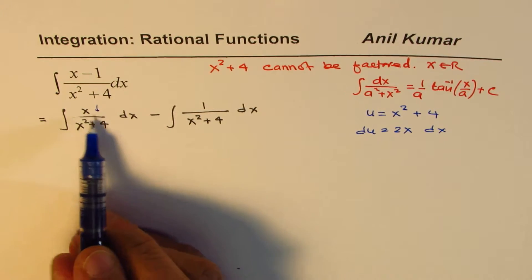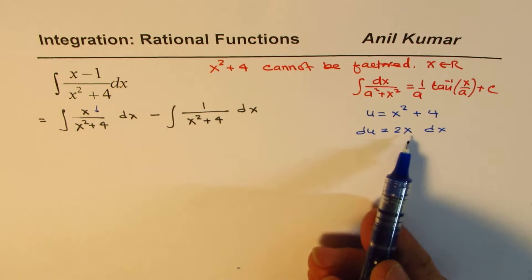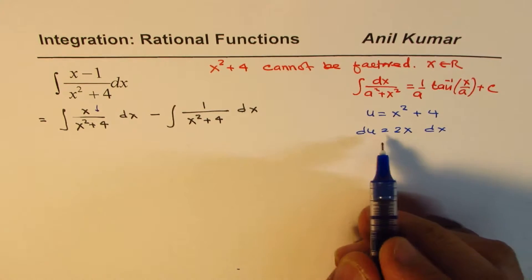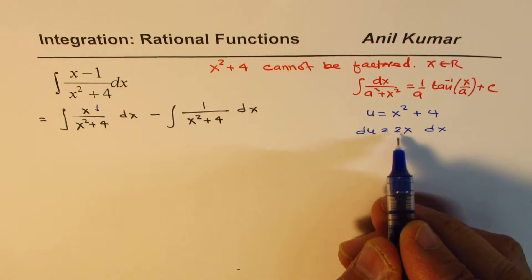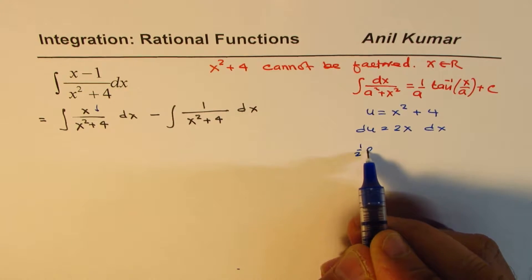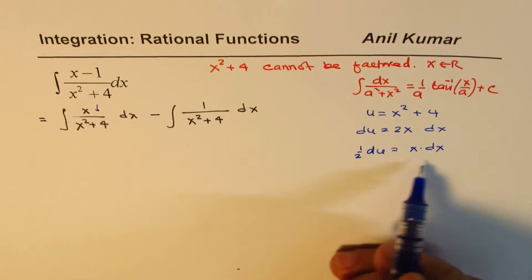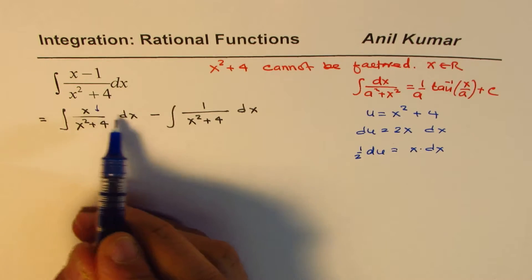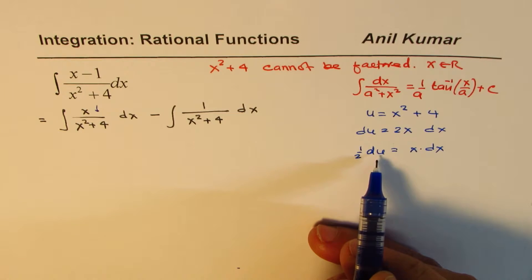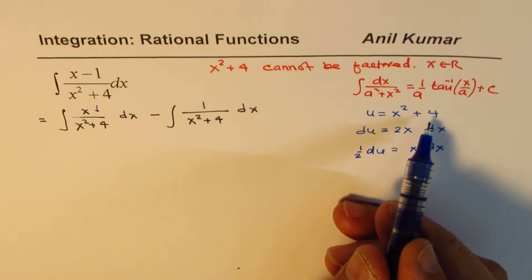So, we will continue with the left side using this substitution. We could write also this as half of du equals to x dx. So, using this substitution, x dx will be replaced by half of du and the denominator by u.